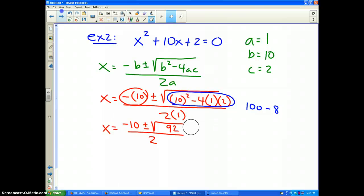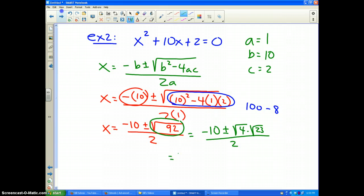Alright, well, now we've got to see: can we break down the square root of 92? Is it possible to break that down? And the answer is yes. The largest perfect square that goes into 92 is 4. So that's negative 10 plus or minus the square root of 4 times the square root of 23 all over 2, which is equal to negative 10 plus or minus 2 times the square root of 23 all over 2. And now all we need to do is reduce it.